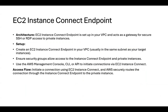The EC2 Instance Connect Endpoint is set up inside our VPC and acts as a gateway for secure SSH or RDP access for private instances in a private subnet. To set it up, we first need to create an endpoint in our VPC in the same subnet as the target instances. We also need to ensure the security groups allow access to both the endpoint and the private instance. We can manage all of this through the console, CLI, or API.